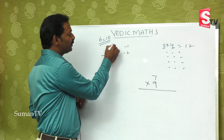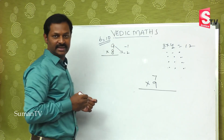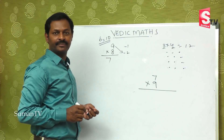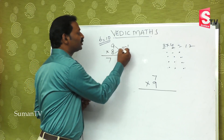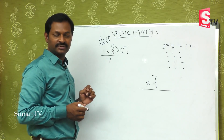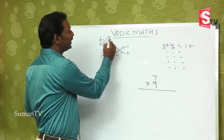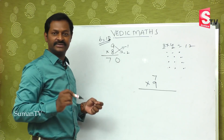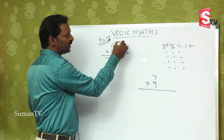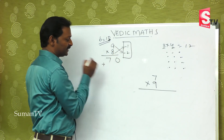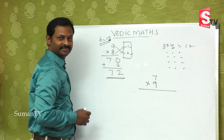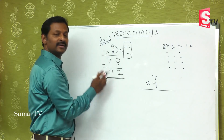Now we cross-calculate: take the top number and add the bottom deviation — nine minus two equals seven. That is the first part of the answer. Or check: eight minus one is also seven. Both give the same definite right answer. Now for the second part, minus into minus is plus, so one times two is two. The answer is seventy-two. So finally nine eights are seventy-two.